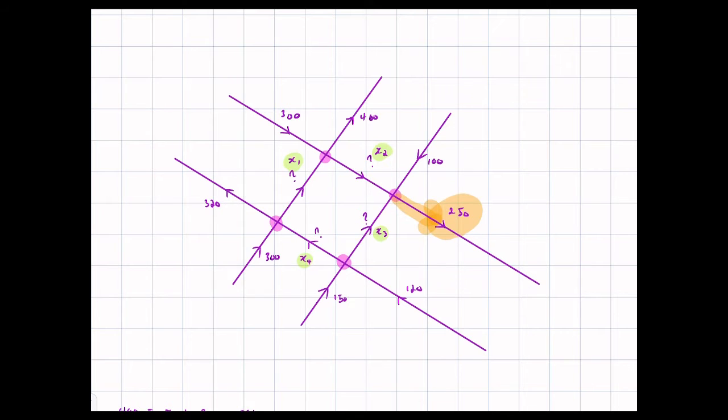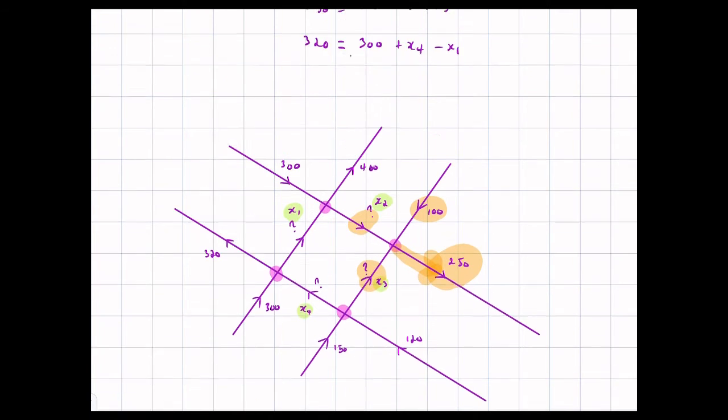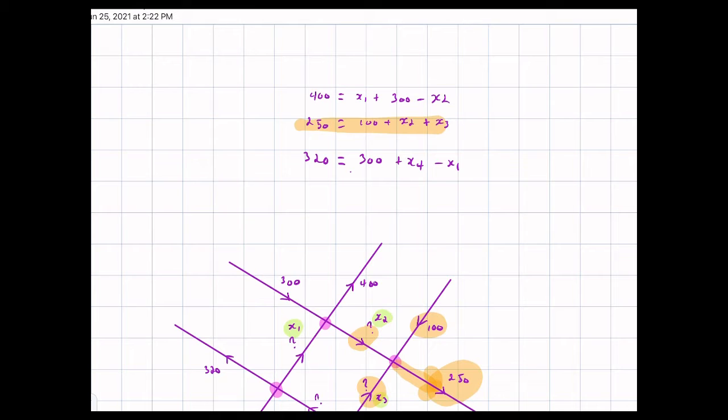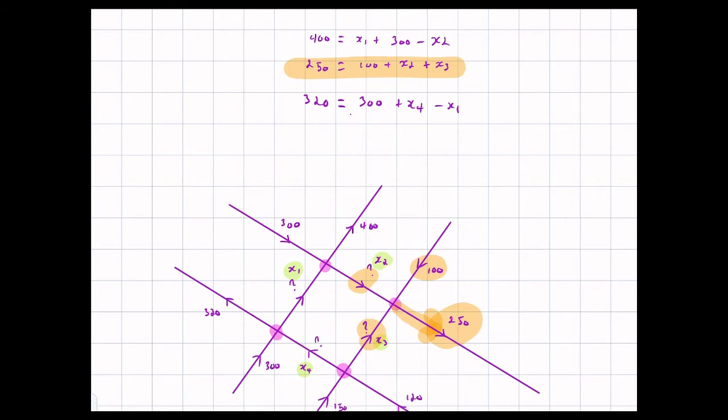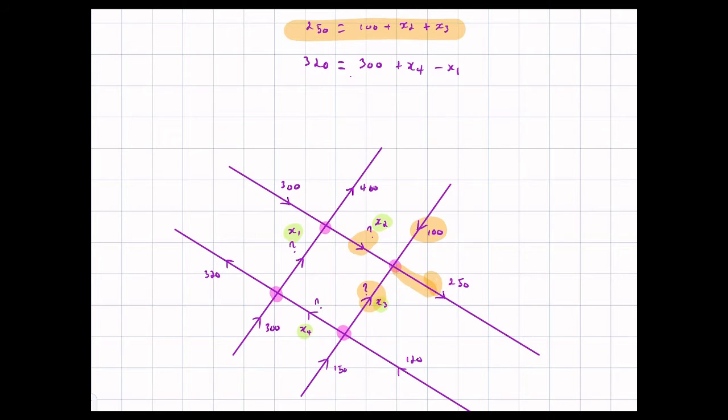So here I know that 250 cars come out from that intersection, that point there. And I know that how many go in? Well, 100 come in from here, x2 come in from there, and x3 come in from there. So that means that, this is my first equation, 250 is equal to 100 plus x2 plus x3. So that's great. I get one equation here.